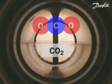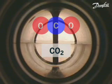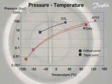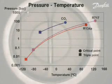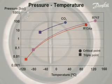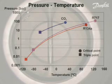The video shows the different phases of CO2 and how two of the phase changes occur by altering either the pressure or the temperature. When compared with commonly used refrigerants R134A and R717, CO2 has some unique characteristics. It operates at a much higher pressure but across a narrower temperature range than both R134A and R717.